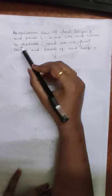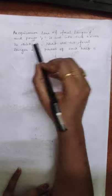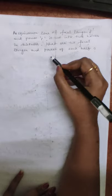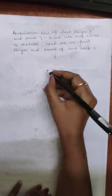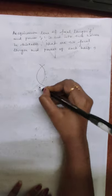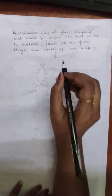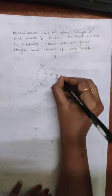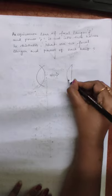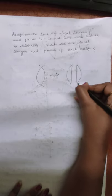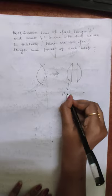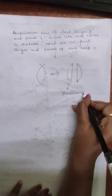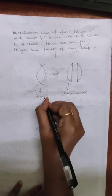Today we will discuss the problem. An equiconvex lens of focal length f and power p is cut into two equal halves in thickness. What are the focal length and power of each half? This is known as an equiconvex lens. If we are cutting this equiconvex lens into two halves in thickness, that means one half will be planoconvex and the other will remain equiconvex.